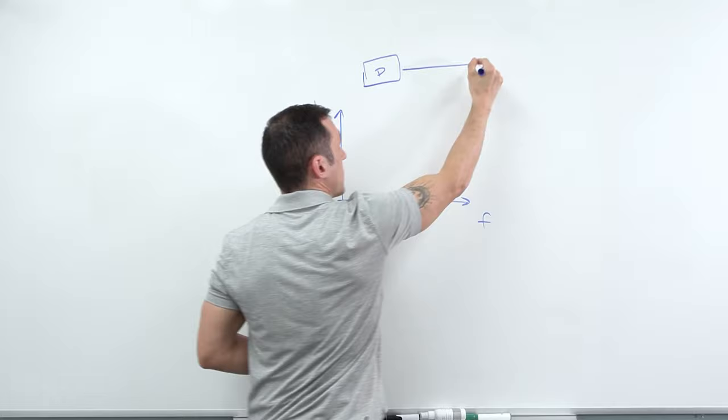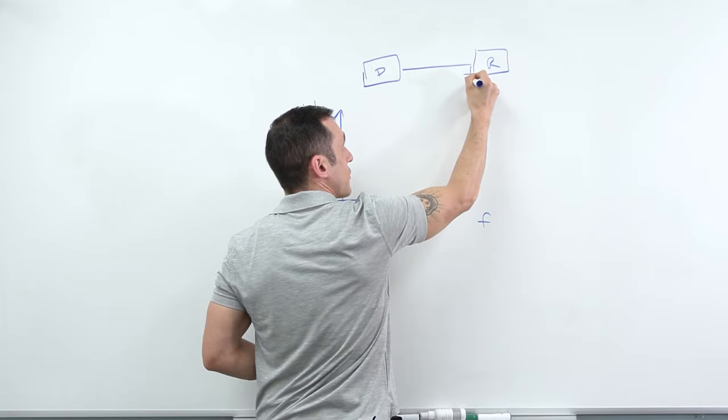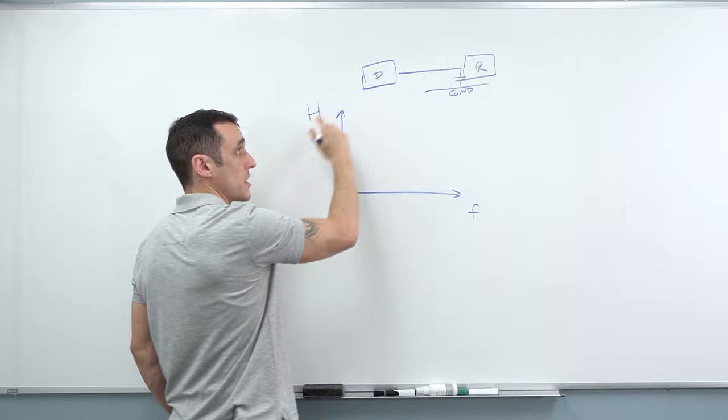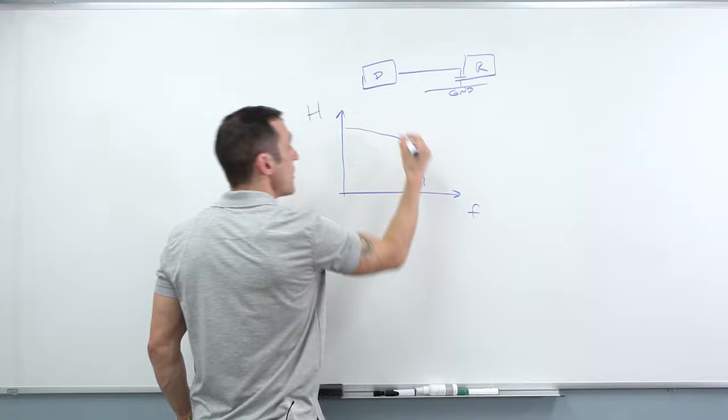And here I'm considering a terminated transmission line that has some load capacitance at the load end. So meaning that I have a driver and it's connected to a receiver, but here at the input of the receiver, there is some capacitance back to ground. And so what that does is it causes your transfer function to appear like a low pass filter.